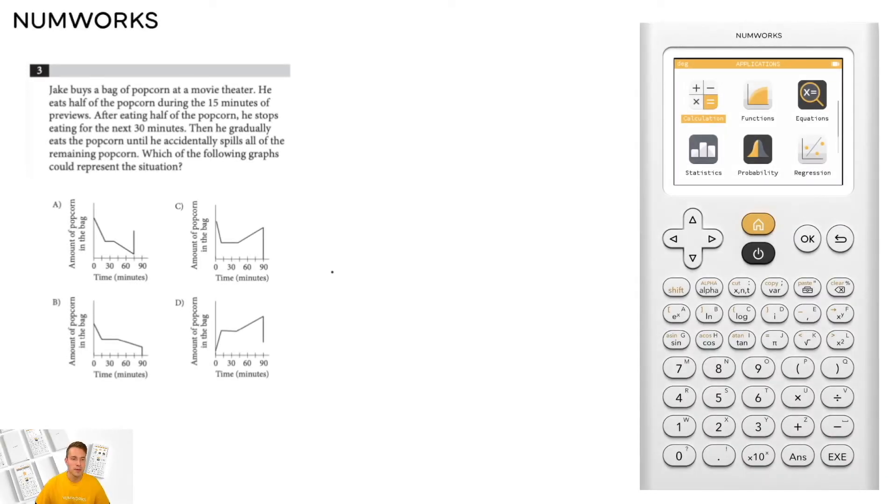Today, we're looking at question 3 from the practice SAT mathematics test. Question 3 states, Jake buys a bag of popcorn at a movie theater.